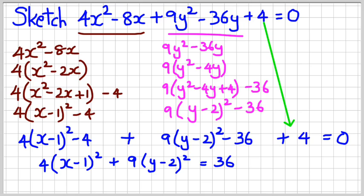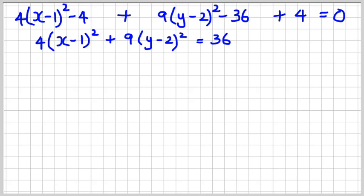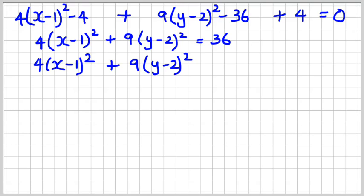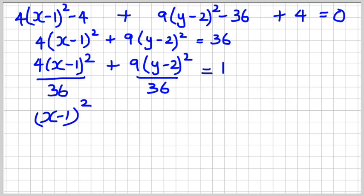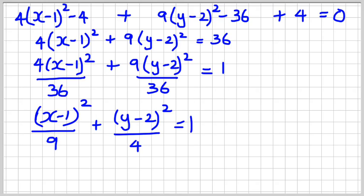I've run out of room here, so continuing on the next slide — this is where we left off. The right-hand side needs to be 1, so I'm going to divide both sides by 36, which makes the right-hand side 1. Since 36 is a multiple of both 4 and 9, I can cancel: the x term becomes (x − 1)² divided by 9, and the y term becomes (y − 2)² divided by 4, all equal to 1.